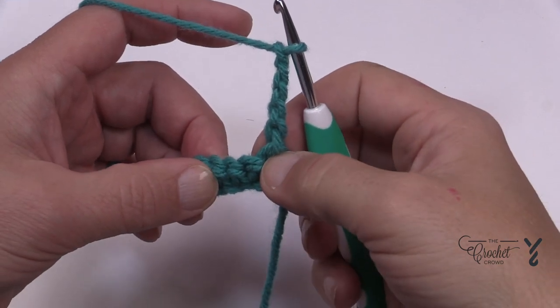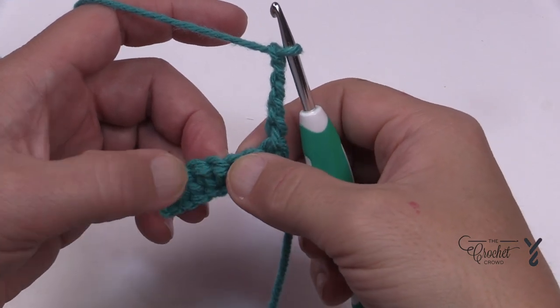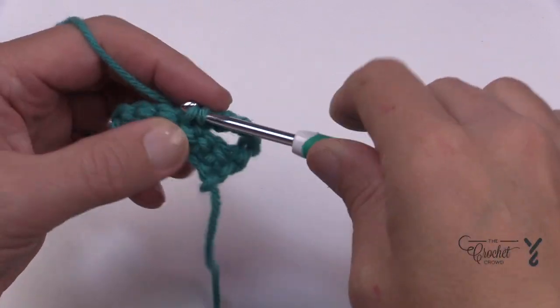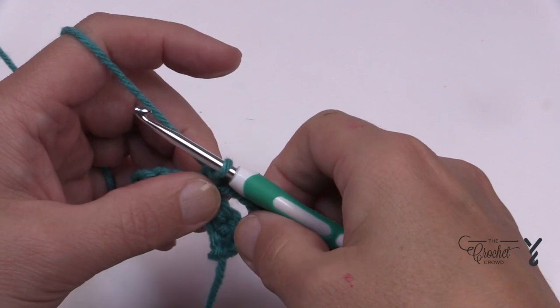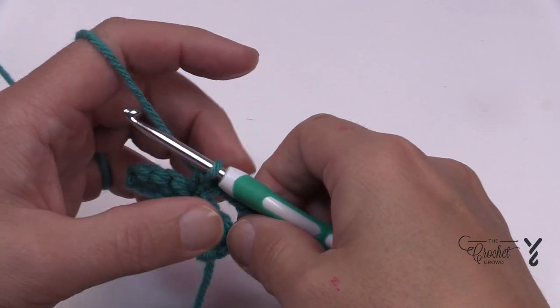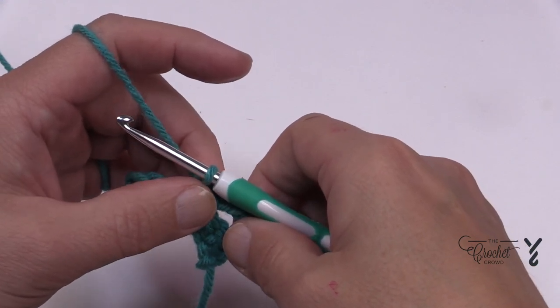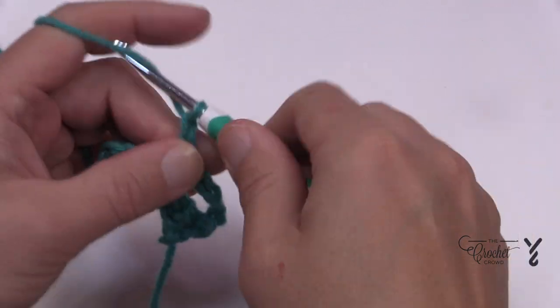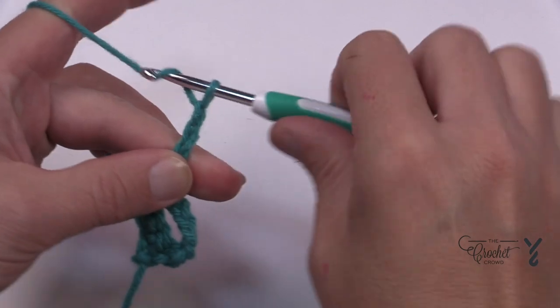So you're going to skip the one you're coming out of so 1, 2, 3 and go right here and you're going to single crochet and you're not quite done yet. So right where you're sitting once you do that you are then going to chain five again. So 1, 2, 3, 4, 5.